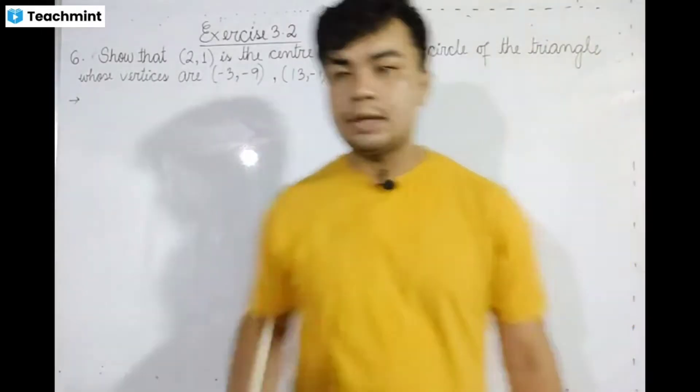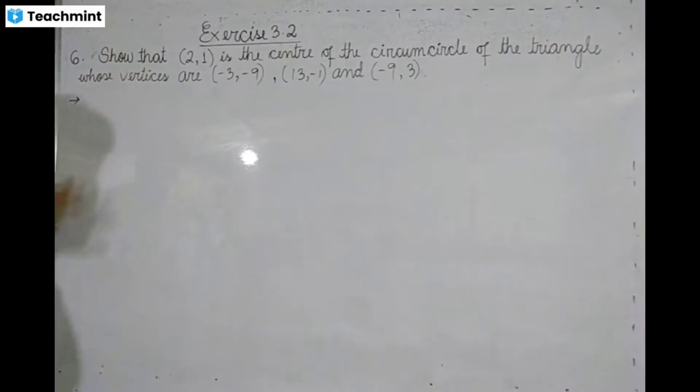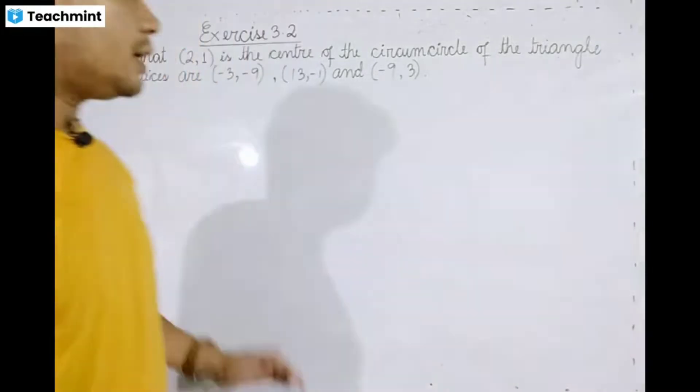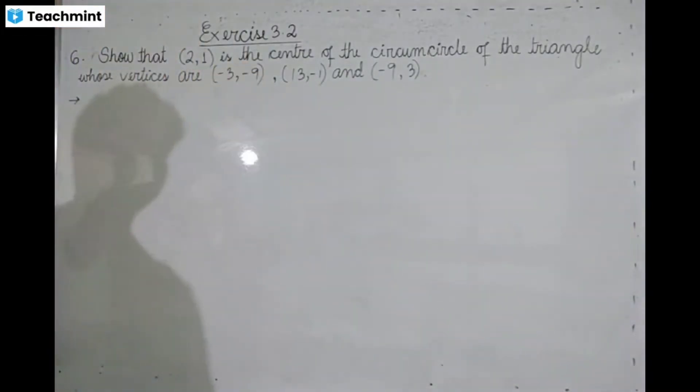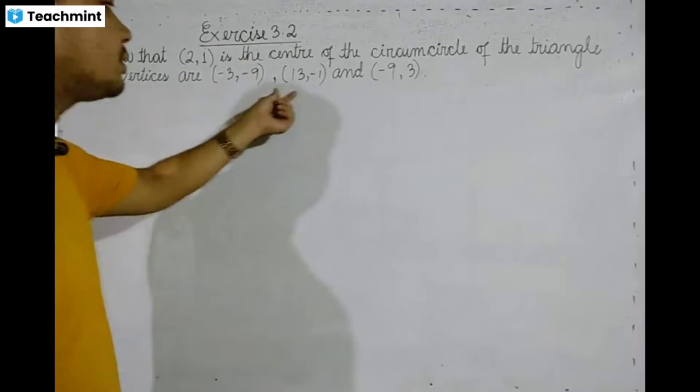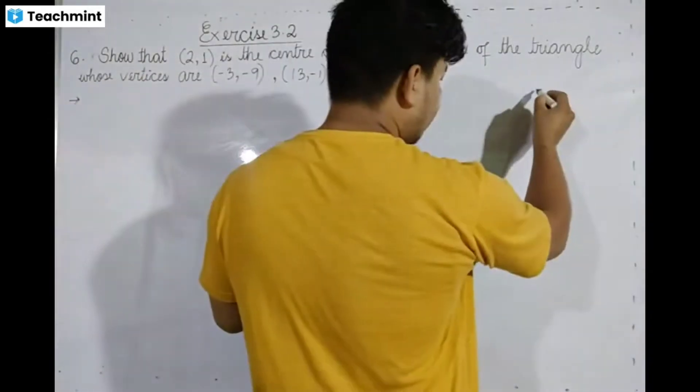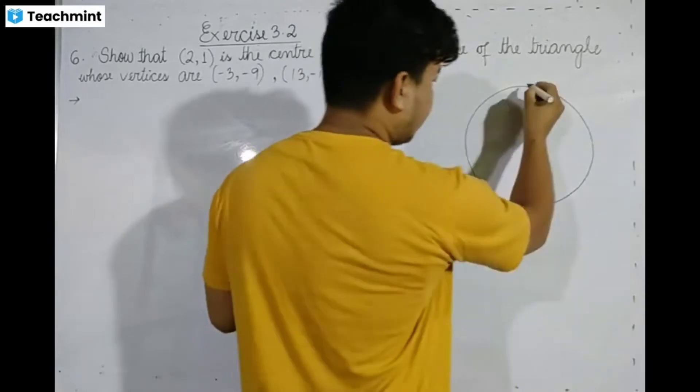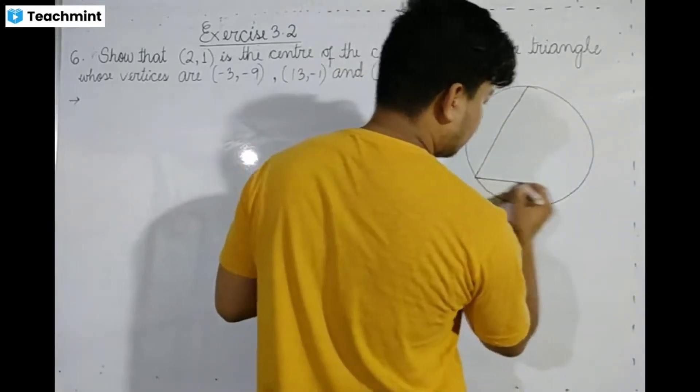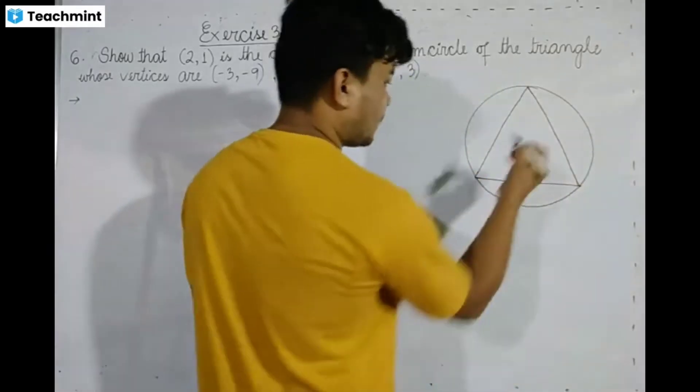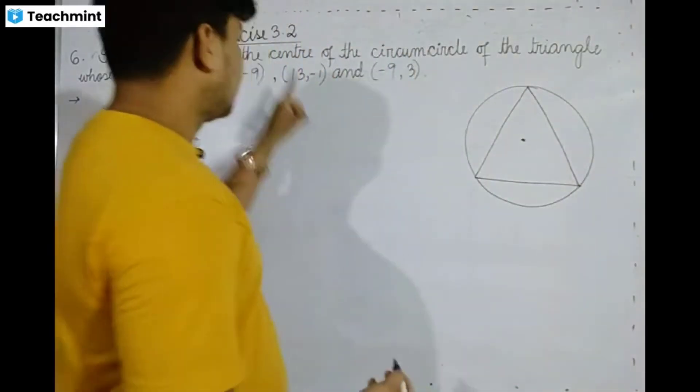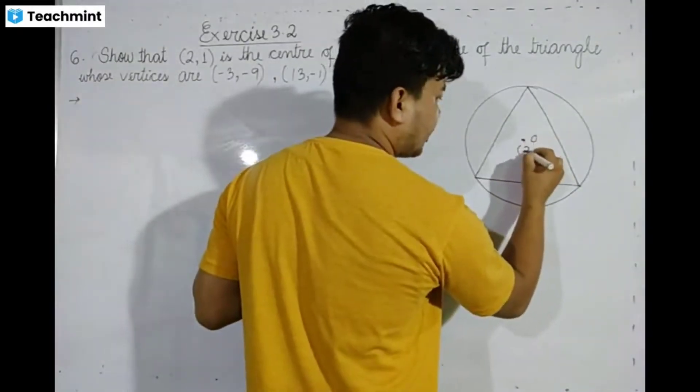Exercise 3.2: Show that (2,1) is the center of the circumcircle of the triangle whose vertices are (-3, -9), (13, -1), and (-9, 3).